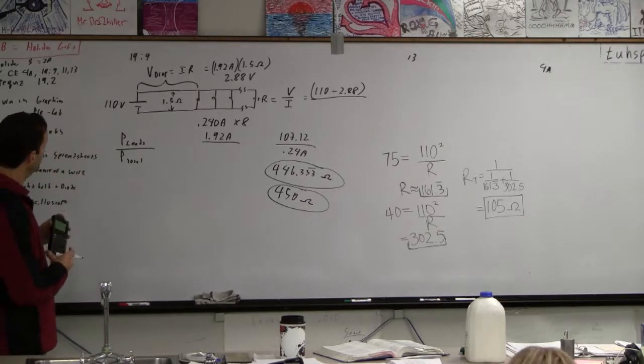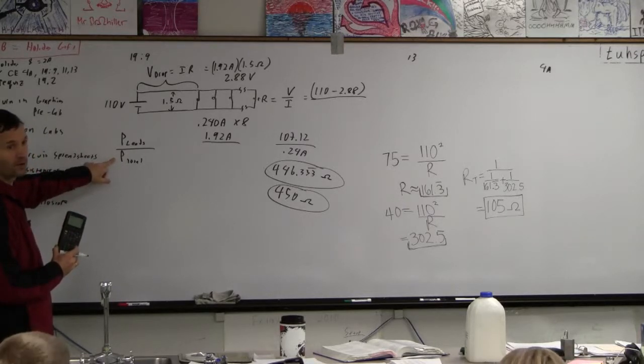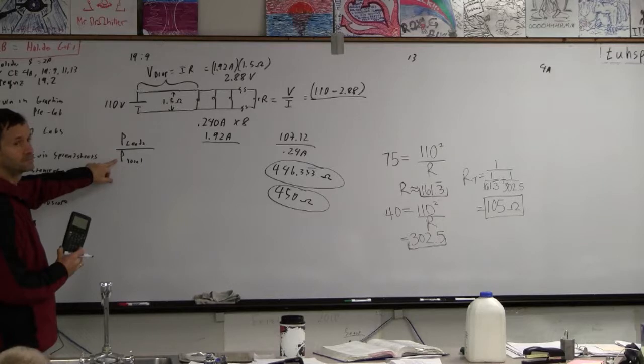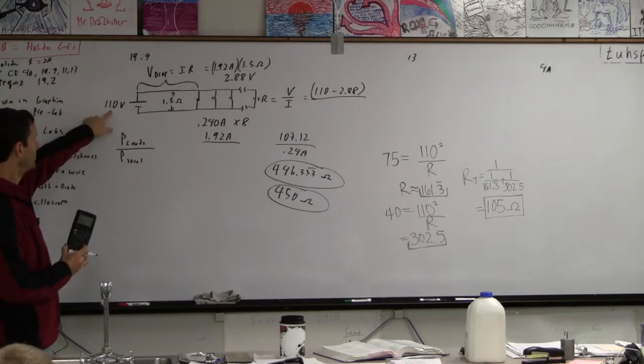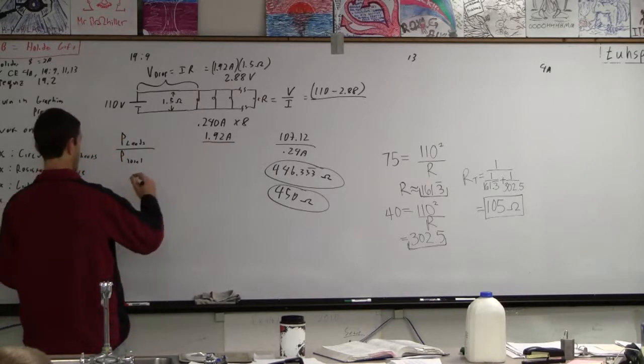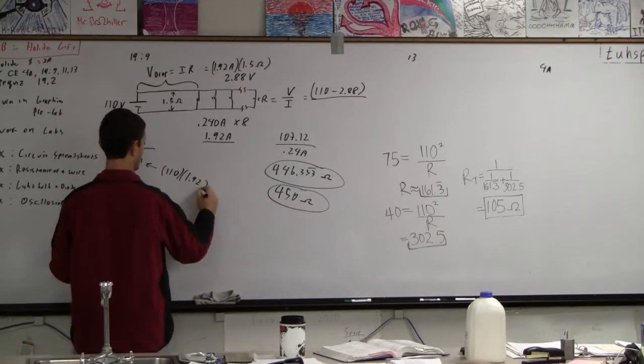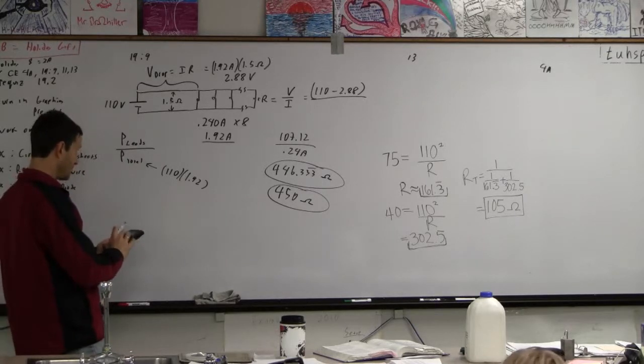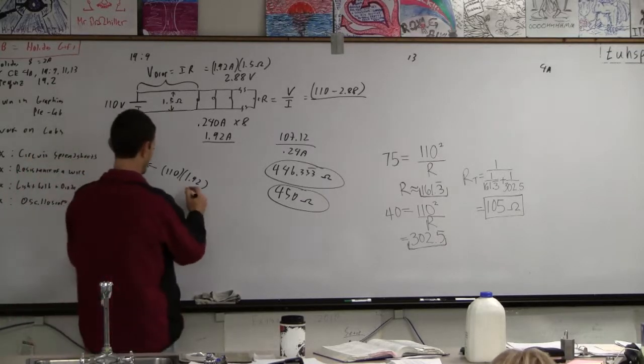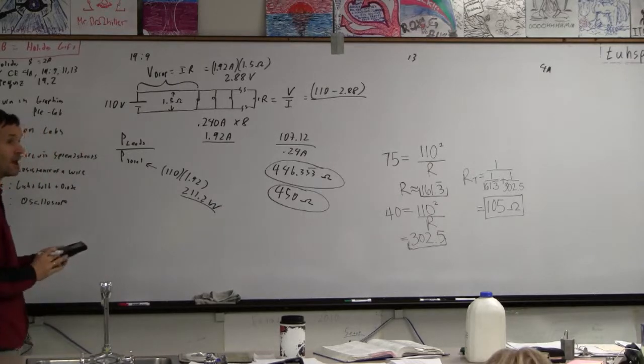And then how do you get the percentage of power lost? What's the total power being used? That's easy. What's the total power? I would just do 110 volts times the current leaving the battery. That's got to be the total power, right? So total power is 110 times 1.92. That's what it's got to be. 211 times 1.92. Indeed it is, 211.2, right? And what is the unit for that?